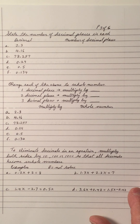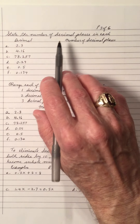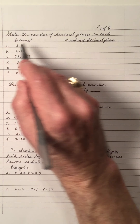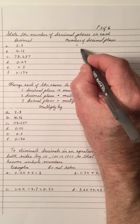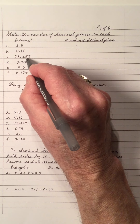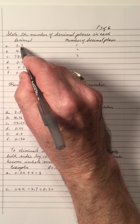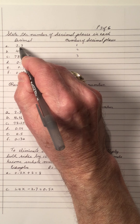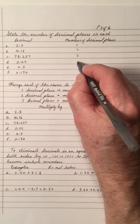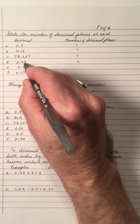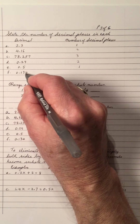I'm going to work these decimals another way now — I'm going to take it through a review first. State the number of decimal places in each: that's one decimal place, that's two decimals — because it's two decimal places after the point — that's three decimal places. The number of decimal places is decided by the number of places to the right of the decimal.